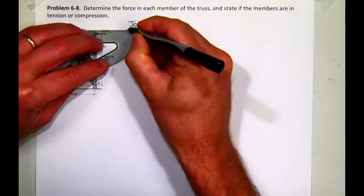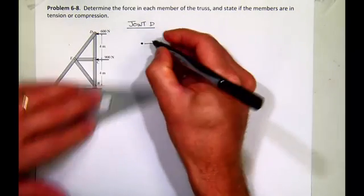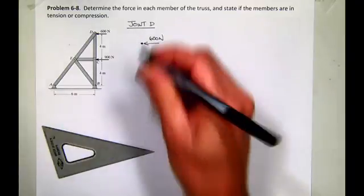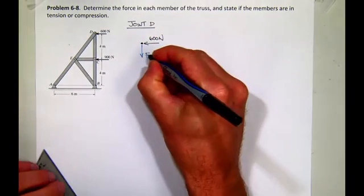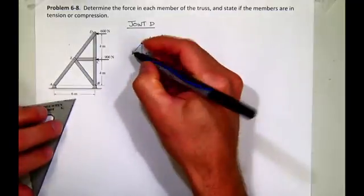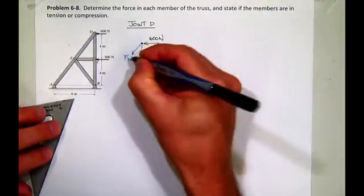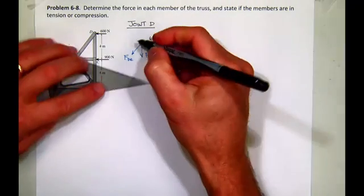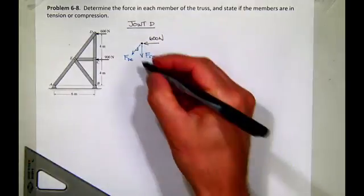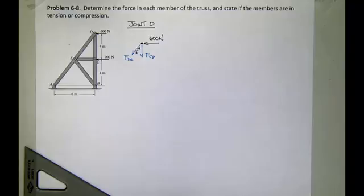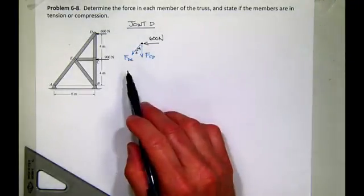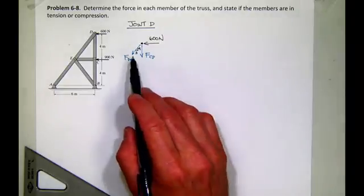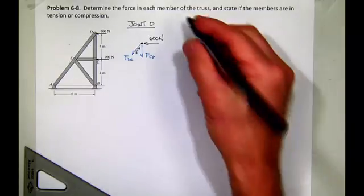So joint D. Here's D. There's the applied force at D, 600 newtons. I'm going to assume tension in force CD and tension in force DE. If you look carefully at the geometry, you should see that that angle is a 3, 4, 5. Now, I can sum forces in the X and I can sum forces in the Y. What one equation can I write initially to get one of these unknowns? If you look at it, only DE has an X component. CD does not. So that would be a good place to start.